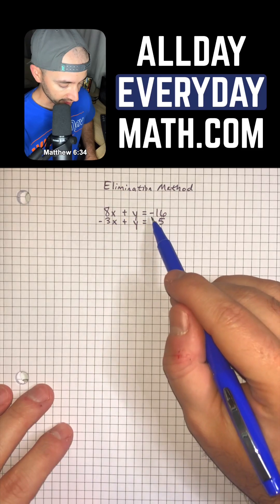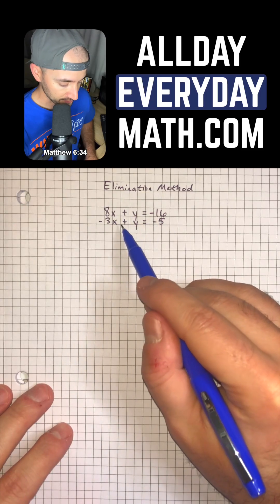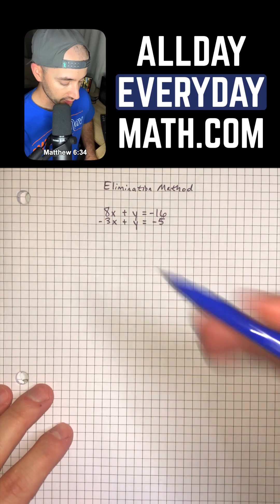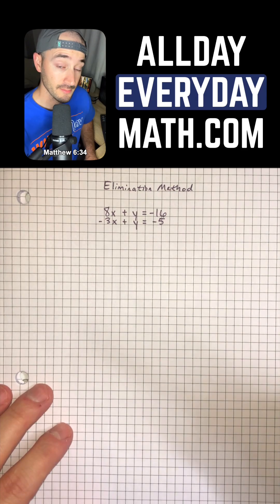So we have 8x plus y equals negative 16 and negative 3x plus y equals negative 5. So we're going to use the elimination method to solve this system of equations.